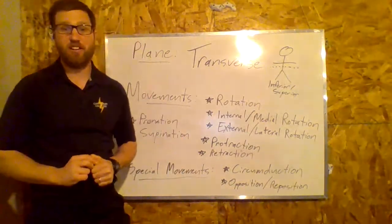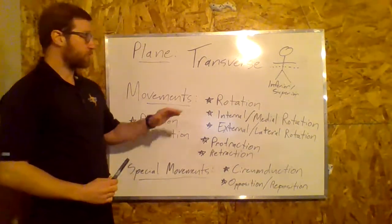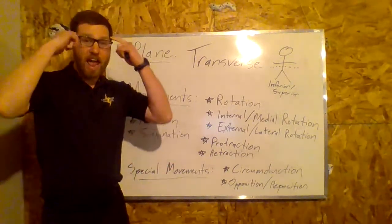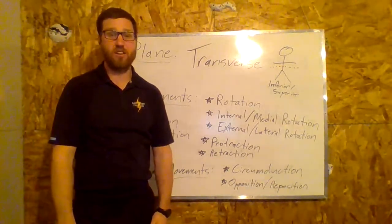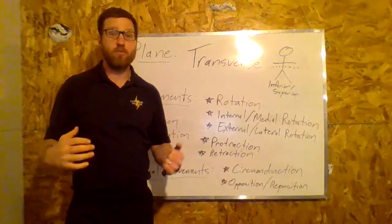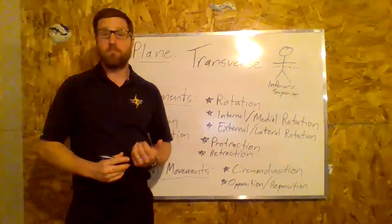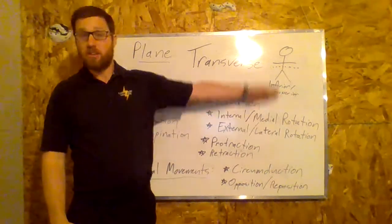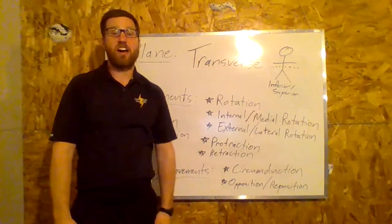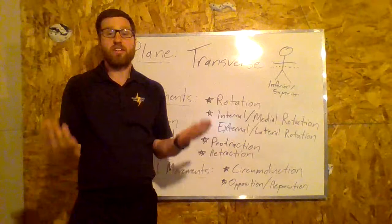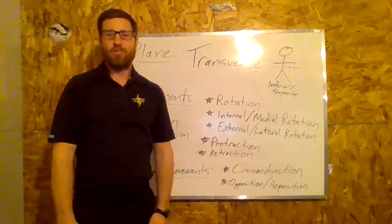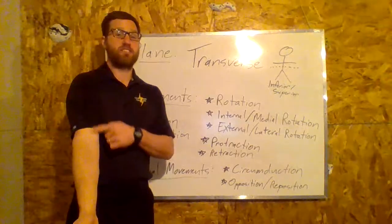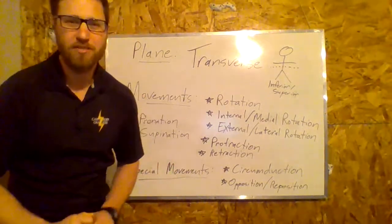Those are the movements of the transverse plane. Make sure you do all of these movements — don't just learn them in your head. If you're a kinesthetic learner, you will learn better when you actually perform the movement. Have somebody play Simon Says with you: 'Simon says circumduct at the shoulder' and you'll do this motion. Move, play with it, have fun. Later in this unit we'll learn which muscles cause these movements to occur.